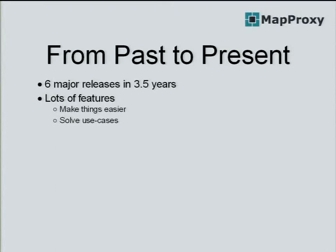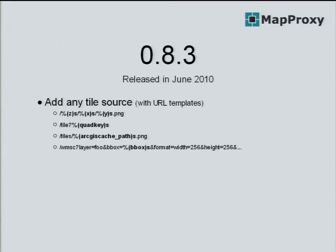From then on to the present, we now have six major releases in the last three and a half years. We added lots of features, mostly to make things easier and to solve completely new use cases. One feature with the 0.8.3 release was that we now supported basically any tile source — you can write your own URL template and access any XYZ tile source or WMSC that requires a fixed parameter order.